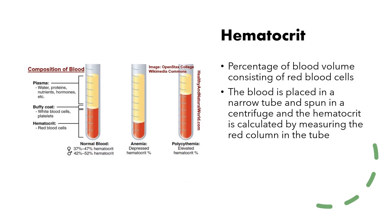Let's talk about the concept of hematocrit. As a clinician, you're going to be checking patients' hematocrit quite often — in some cases almost every day. The hematocrit is the percentage of blood volume that consists of red blood cells. To measure it, you take blood, put it in a narrow tube, spin it down in a centrifuge, and then calculate the hematocrit by measuring the red column.